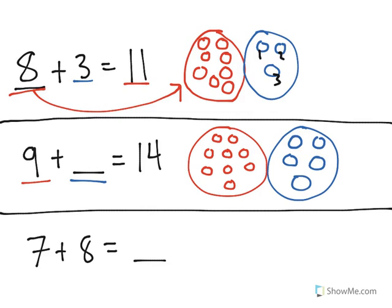The second group has a total of 5. 9 plus 5 equals 14. And the last one looks more like problems you've seen.